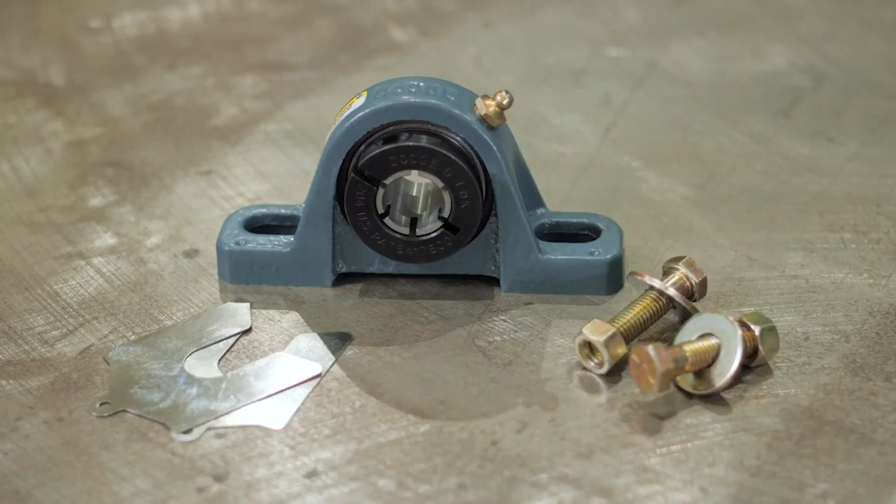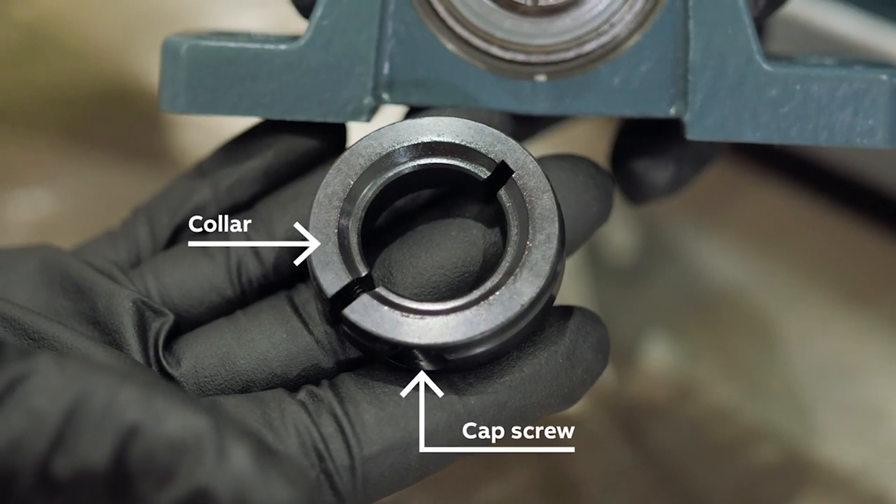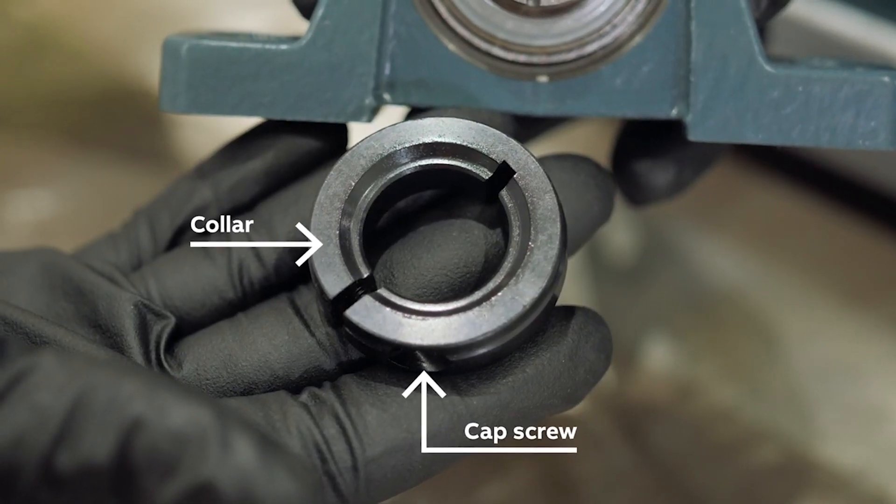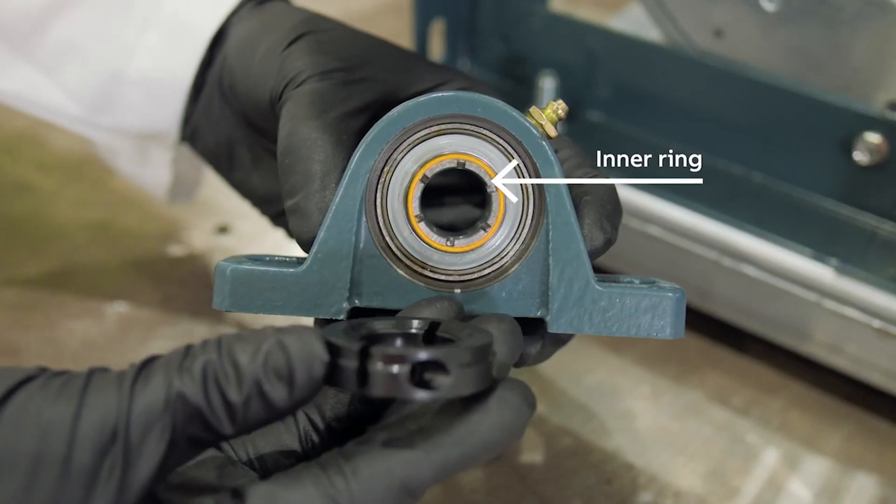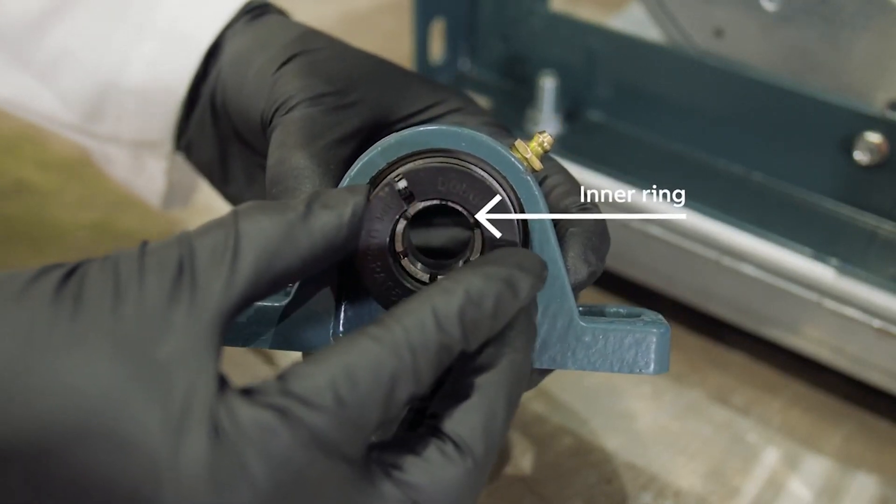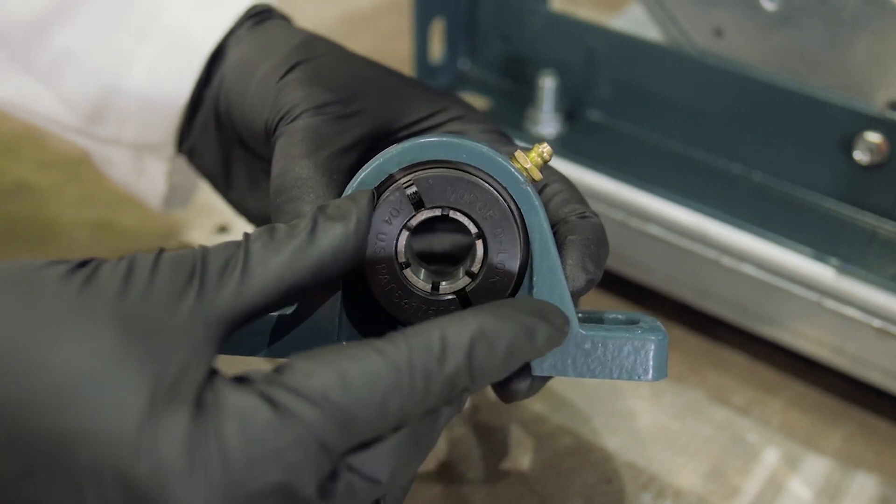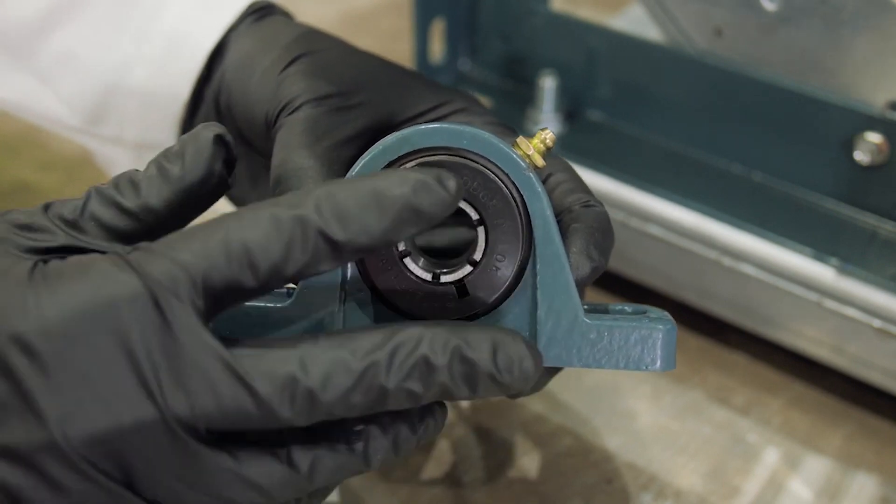Dodge D-Lock bearings are attached to the shaft by a unique locking mechanism featuring a collar that sits on a specially machined inner ring. As a single cap screw is tightened, the collar compresses the inner ring and attaches the bearing to the shaft. Keep the collar square against the shoulder of the inner ring throughout the installation process.